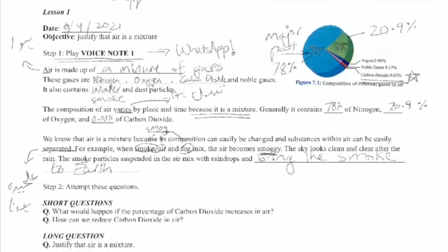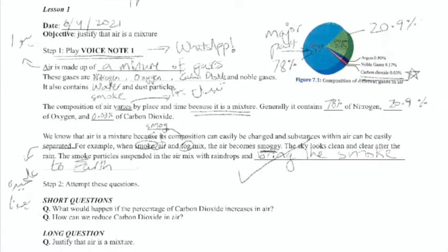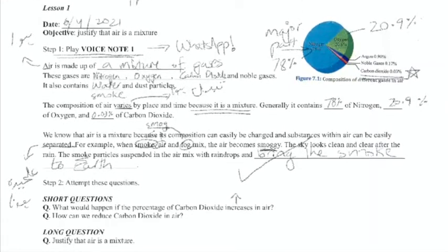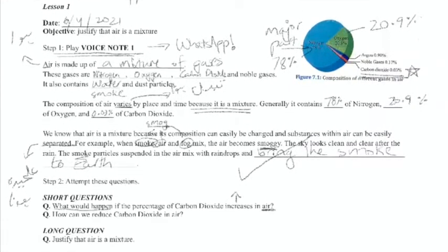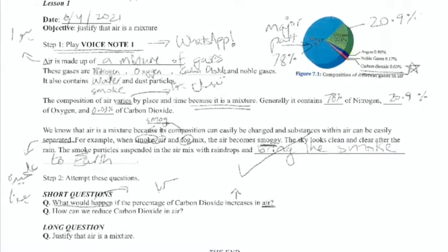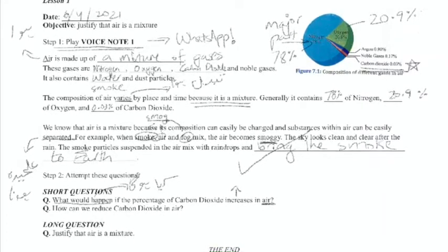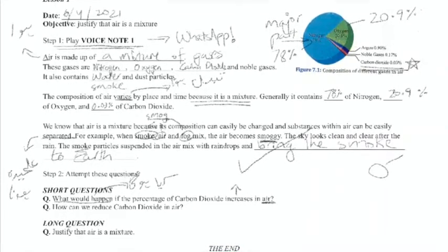The first short question is: What would happen if the percentage of carbon dioxide increases in air? Increases means to grow. What would happen means what will happen? What will happen if the percentage of carbon dioxide increases in air?